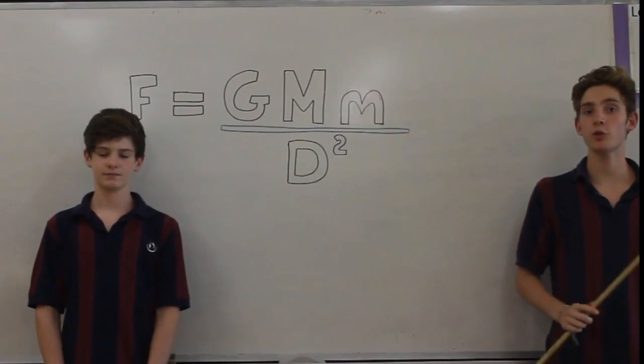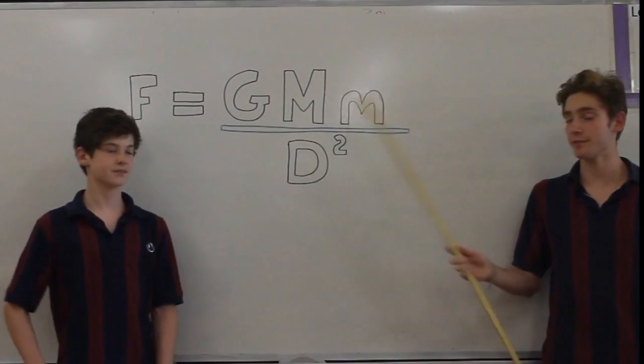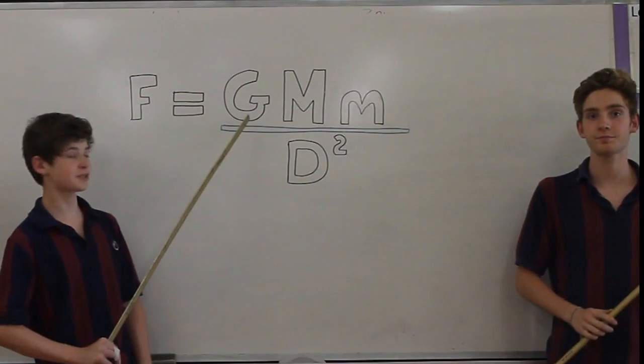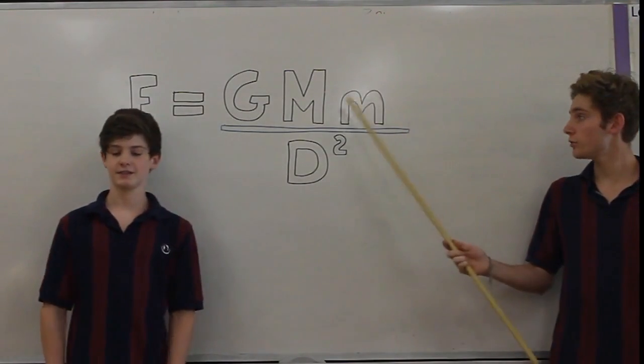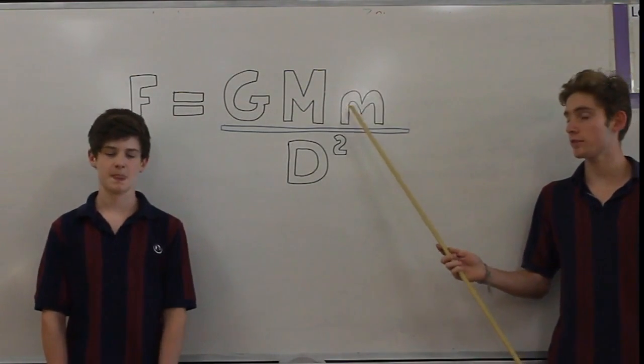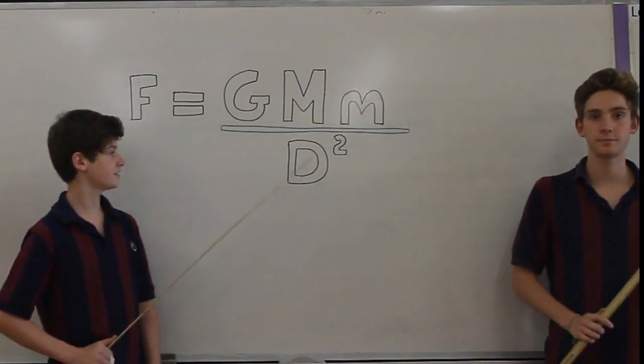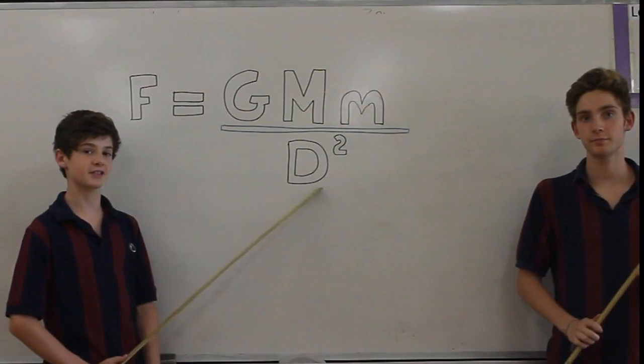About 350 years ago, Newton said that mass causes gravity, and we calculate the force with this equation. G is a very small constant number. These are two masses in kilograms, and this is the distance in meters squared.